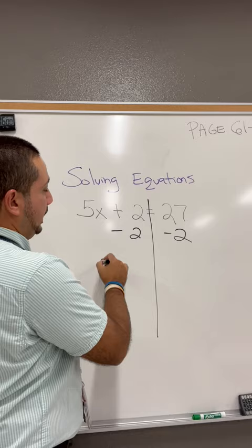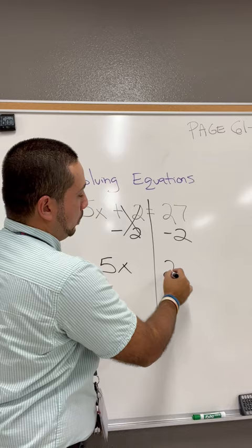Bring down the 5x. This cancels out. 27 minus 2, 25.